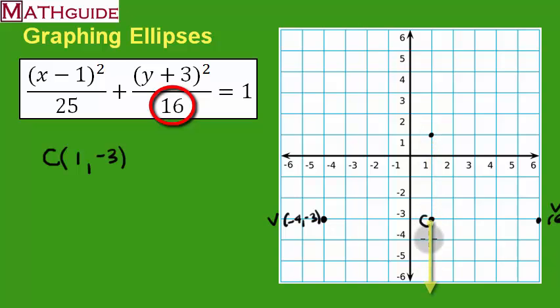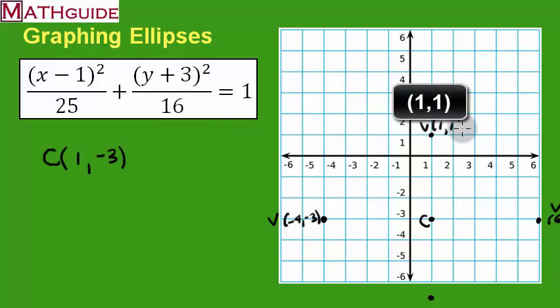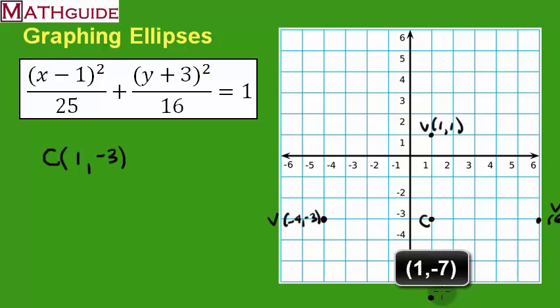And we go down 4: 1, 2, 3. We're going to have to go off the grid here slightly, but I think we could locate that fairly easily. So this point right here is going to be at 1, 1. This point over here is going to be located at 1, negative 7. And we've got the vertices.